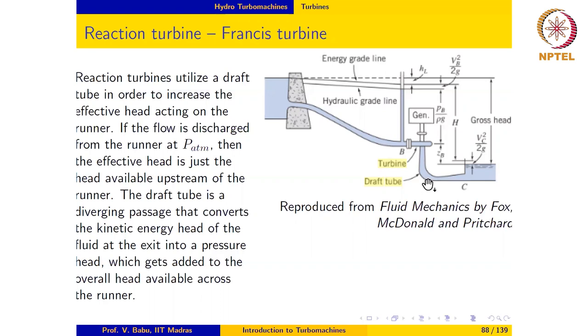The draft tube, which is shown here, is a diverging passage that is used to increase the effective head in such a reaction turbine installations. Let us see how this is accomplished.